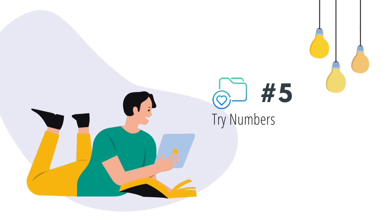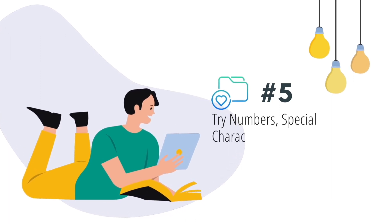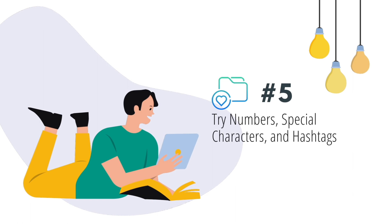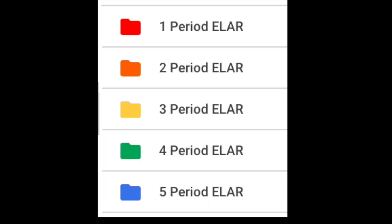Number five: try numbers, special characters, and hashtags. Numbering my files and folders has helped me keep my most important folders at the top of my Drive, no matter what they are named.